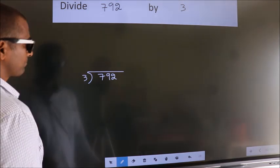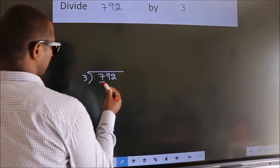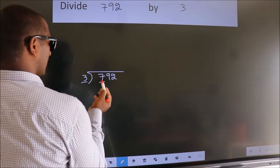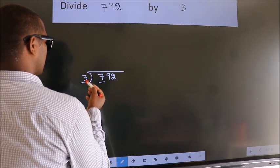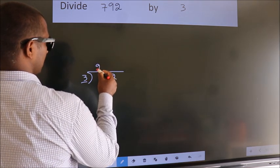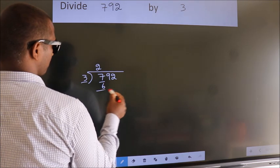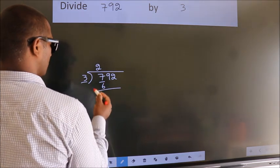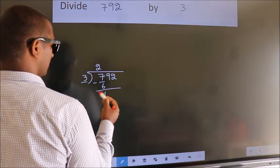Next, here we have 7, here 3. A number close to 7 in 3 table is 3 times 2, which is 6. Now we should subtract, we get 1.